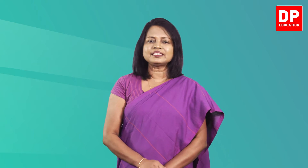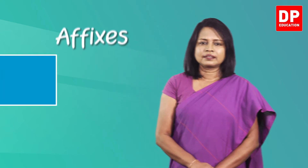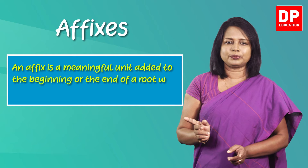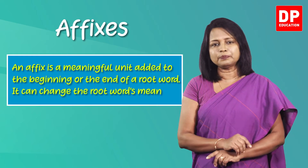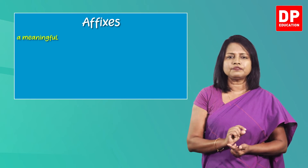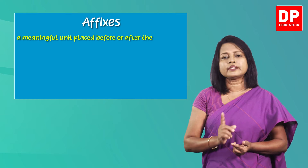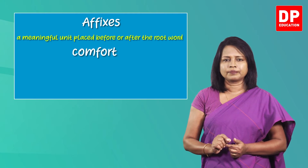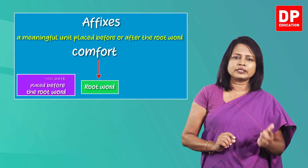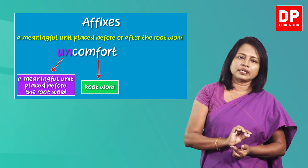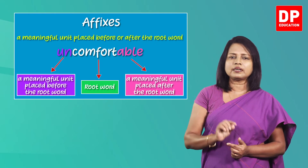Let me start the lesson by explaining what affixes are. An affix is a meaningful unit added to the beginning or the end of a root word. It can change the root word's meaning. Now take a look at this example. The root word is 'comfort'. There are two affixes added to this root word — 'un' is added before the root word, and 'able' is placed after the root word.